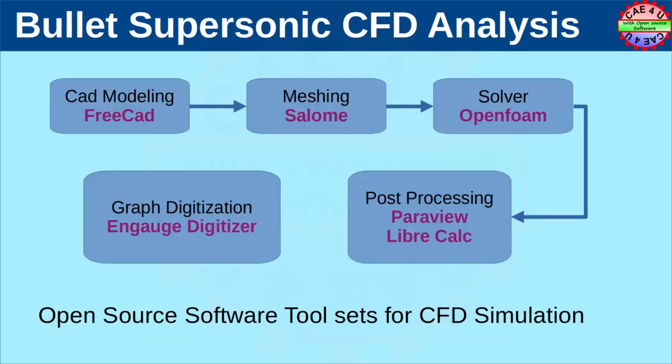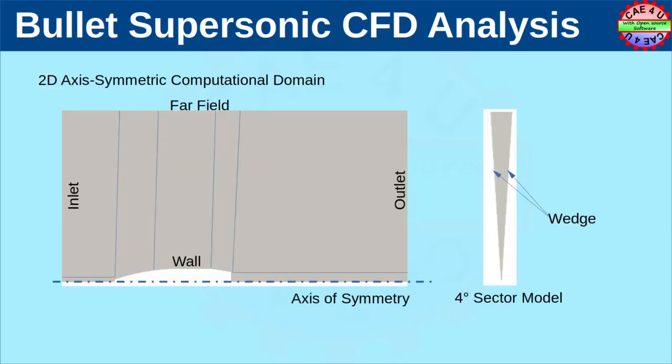Let us look into the workflow. The CAD modeling is done using FreeCAD. Meshing is done using Salome. OpenFOAM has been used as the solver to solve the CFD part. Post-processing was done using Paraview and LibreCalc. In order to get graph coordinates from published images, Engauge Digitizer has been used for graph digitization. Let us now look into the flow domain.